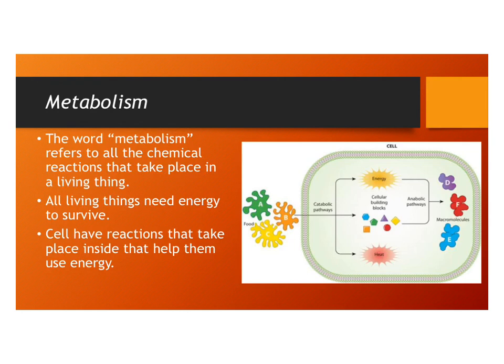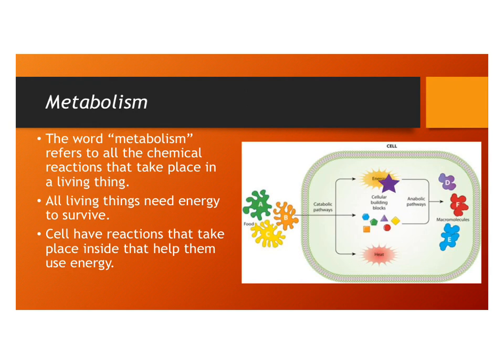There are two things to understand here. The first is catabolic pathways, which take food or some other substance and break it down to get energy. The other pathways are called anabolic. Anabolic has to do with building up new molecules, so energy is required to build those things up.